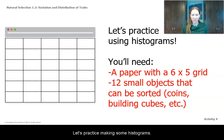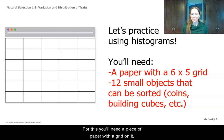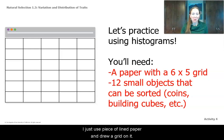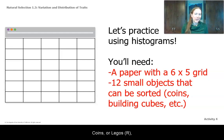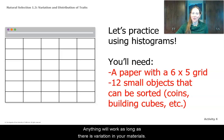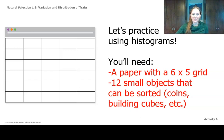Let's practice making some histograms. For this you'll need a piece of paper with a grid on it. I just used a piece of lined paper and drew a grid on it, and 12 small objects that you can sort. So you could use coins, legos, building cubes — anything will work as long as there is variation in your materials.